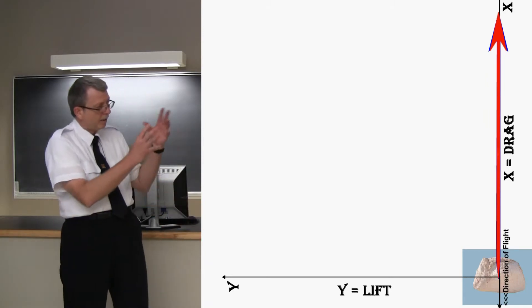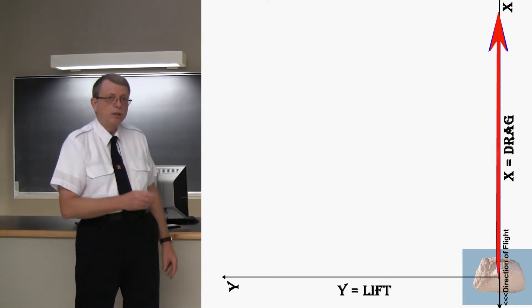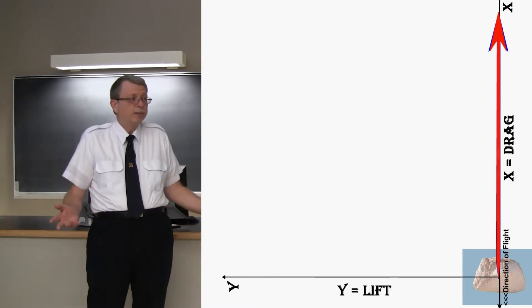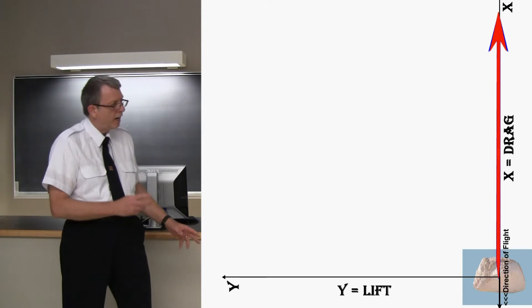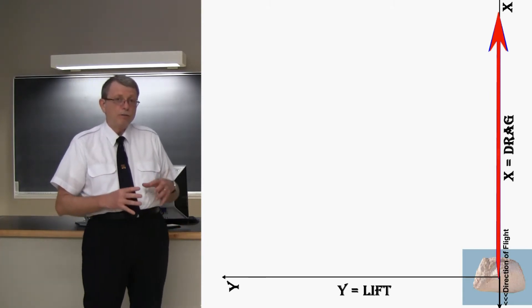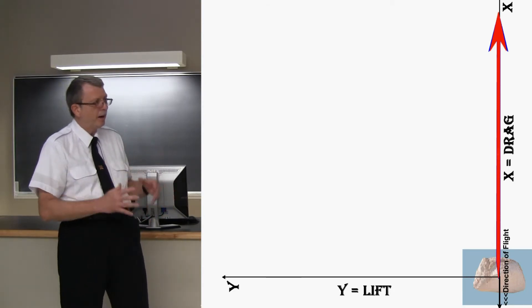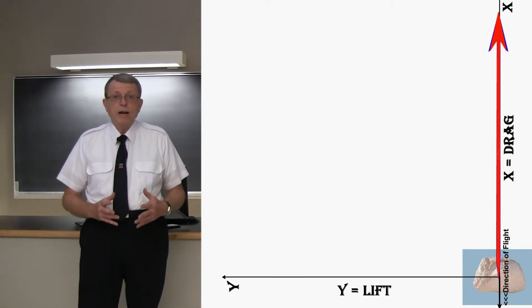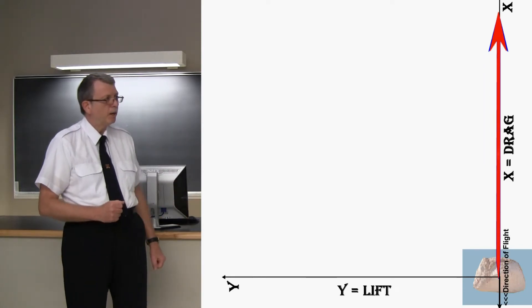And so we can see here now that the rock falls down under the influence of weight, which we can't see here. But we know it's there and we know it acts straight down. And the aerodynamic force is straight up. And the rock will fall faster and faster. And the aerodynamic force will get bigger and bigger. And eventually, the aerodynamic force will be equal to the weight of the rock. And the rock's at its terminal velocity.